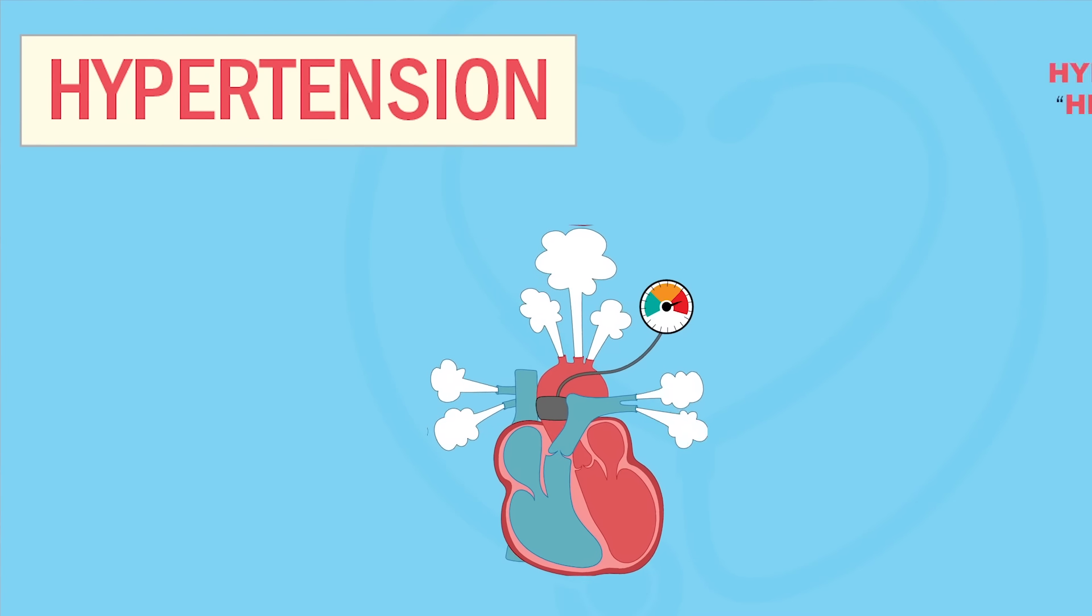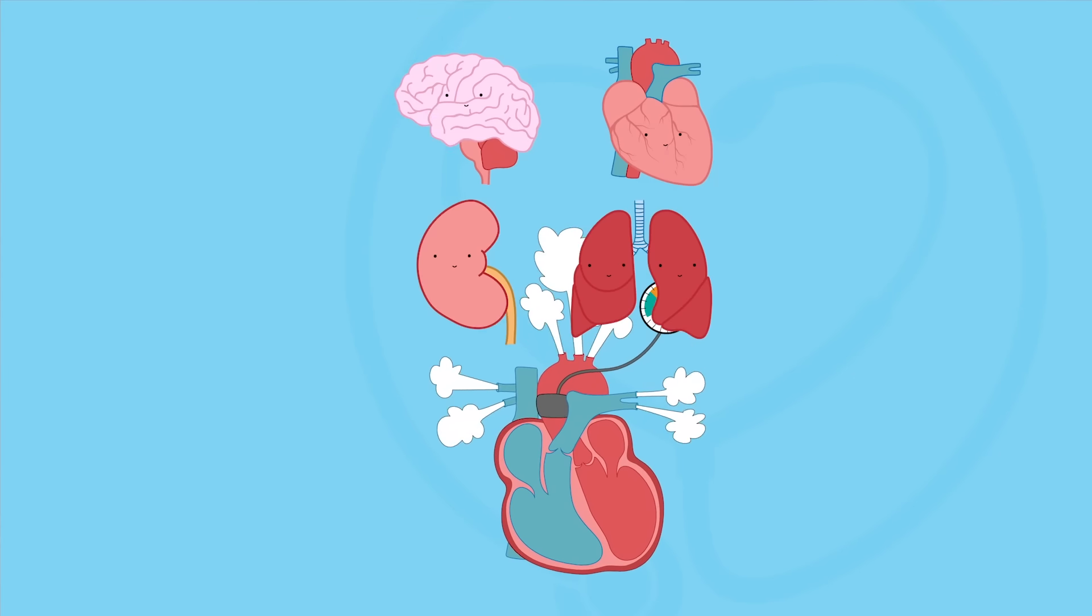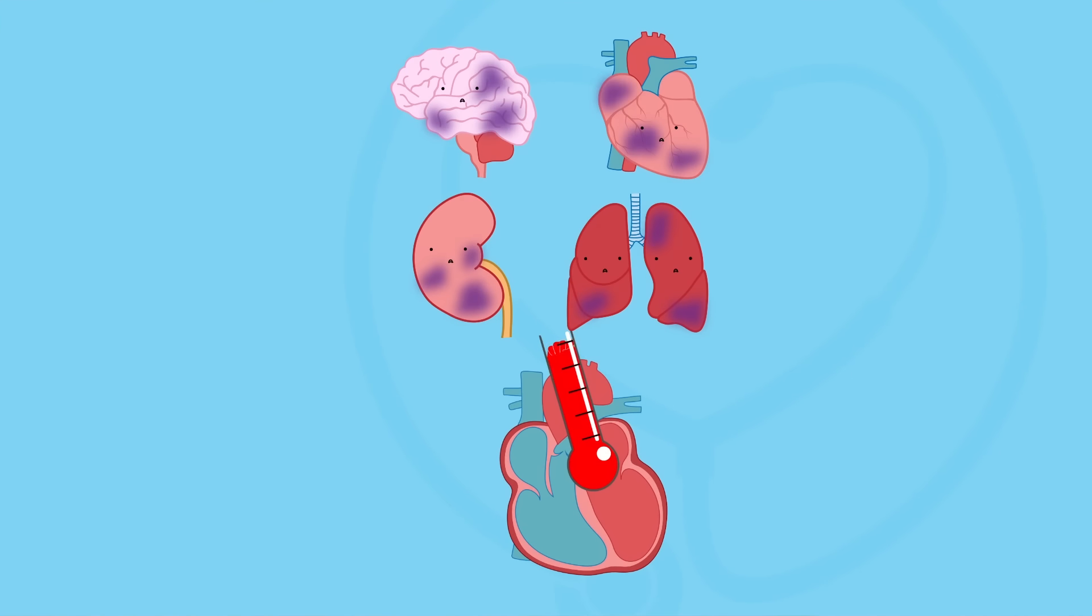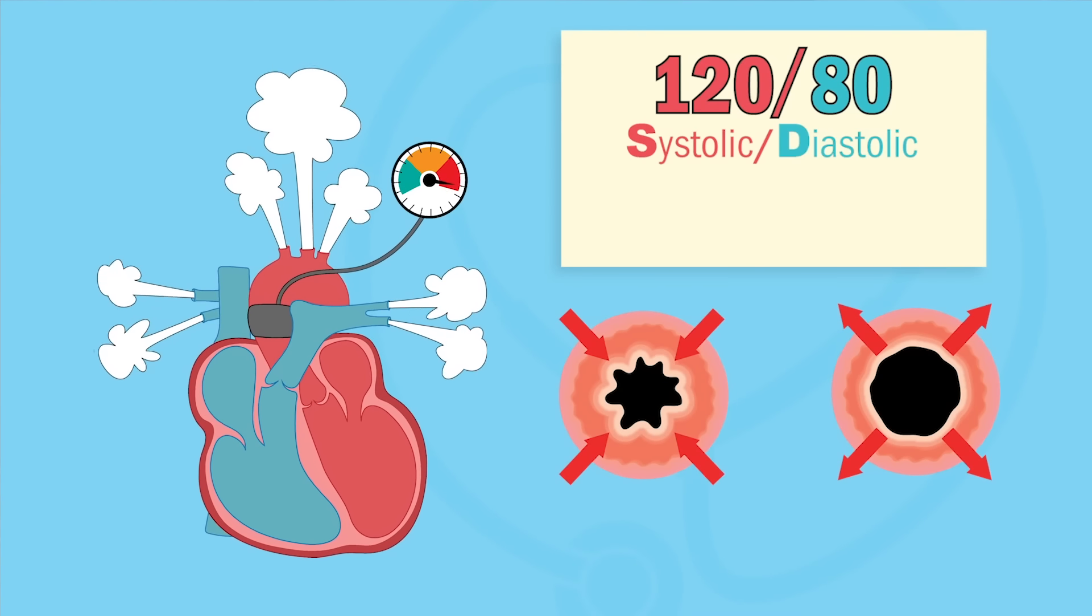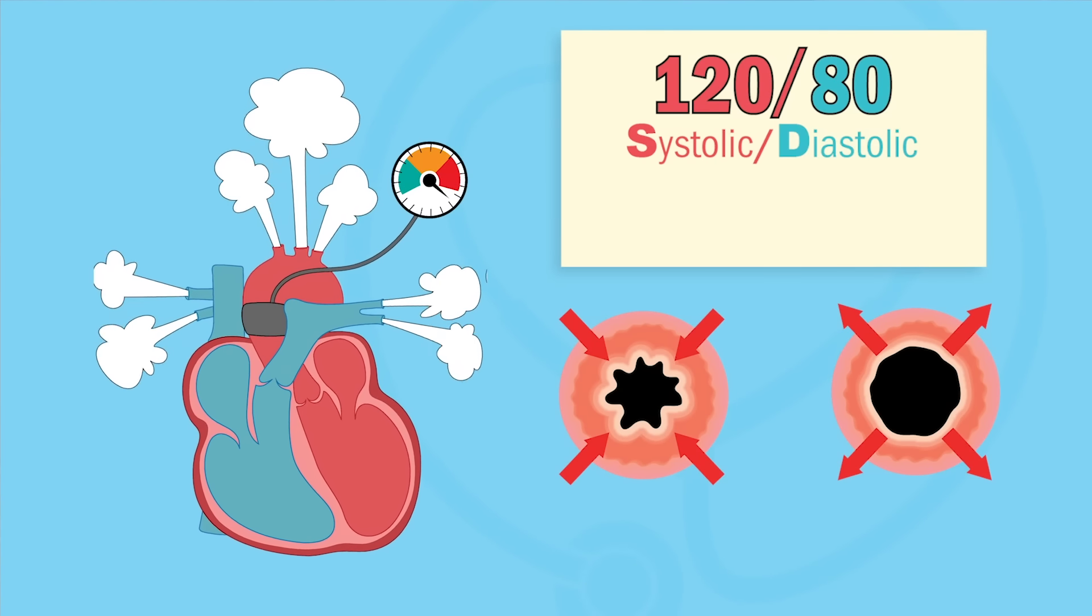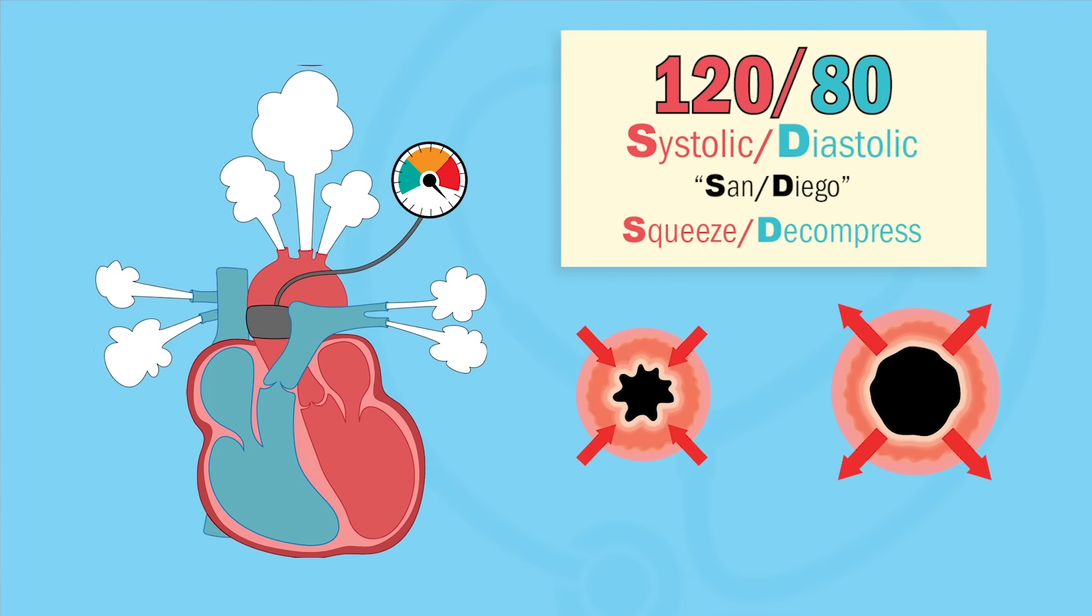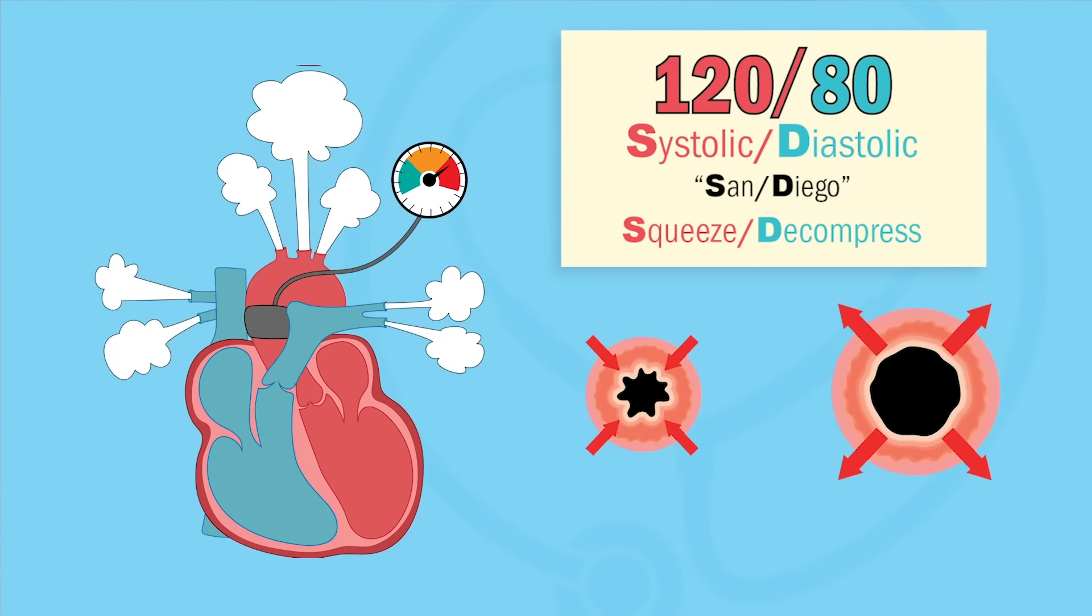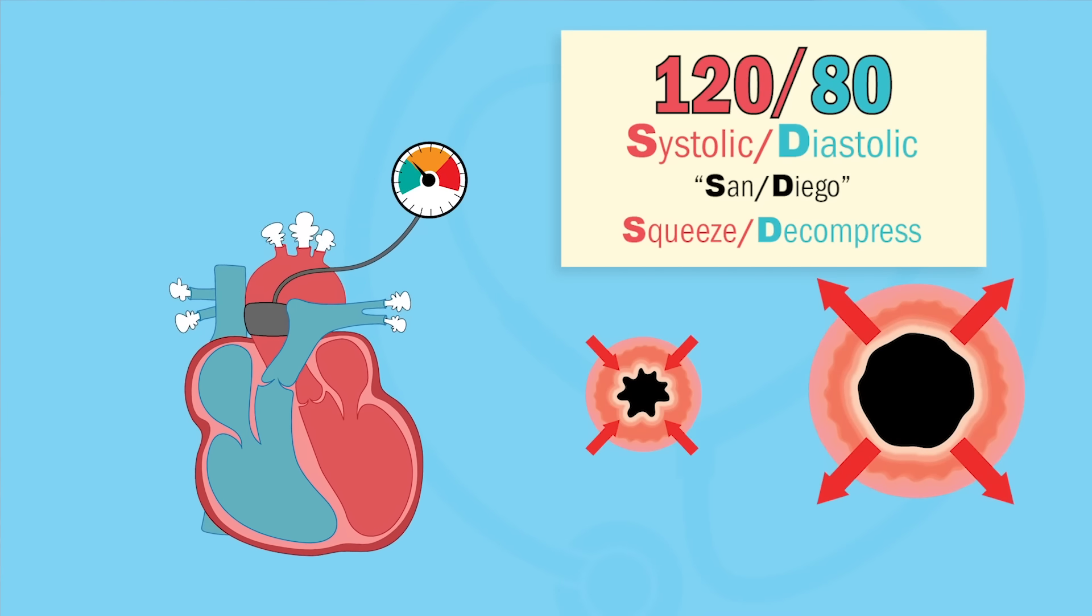Today we're wrapping up hypertension, which is high blood pressure. Just think high tension on the arteries and vital organs. Normal BP is 120 over 80. Systolic is on top and diastolic is on the bottom. Our memory trick is San Diego. Systolic is the squeeze and expansion of blood vessels under pressure, and diastolic is the decompressing, the relaxation of the vessels.